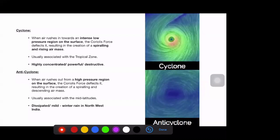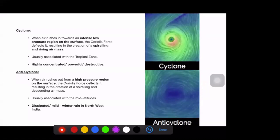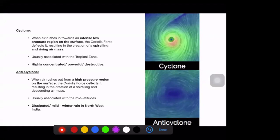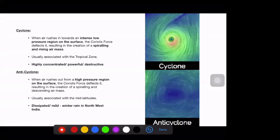An anti-cyclone is a system with a high pressure region on the surface. In the high pressure region, there is divergence — the air rushes outwards. When the air rushes out from a high pressure region on the surface, the Coriolis force deflects it, resulting in the creation of a spiraling and descending air mass. It is usually associated with the mid-latitudes. Anti-cyclones are characterized by dissipated systems that can be as large as 1500 km in circumference. They are mild systems, not concentrated and powerful like cyclones.